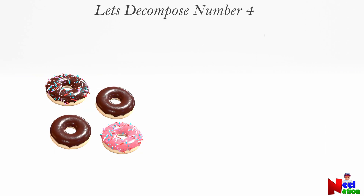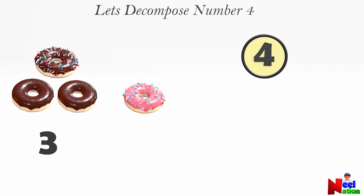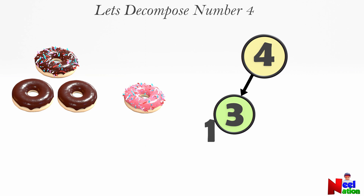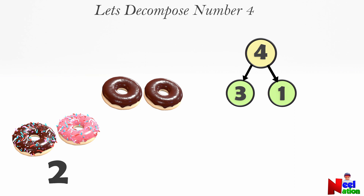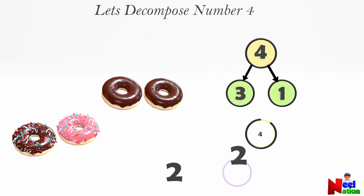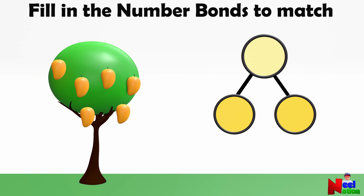Now let's move to the next fun decomposing game! Here are some donuts. How many donuts do you see? Four — right! How many chocolate dip donuts are there? Three. How many strawberry dip donuts are there? One. So when you decompose four, you get three and one. How many donuts have sprinkles on them? Two. And how many do not have sprinkles? Two. So four can be decomposed into two and two. Can you fill in the number bonds to match?